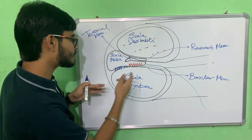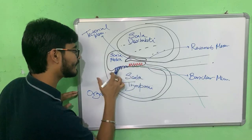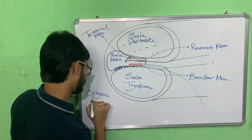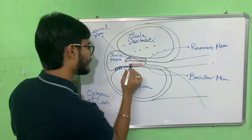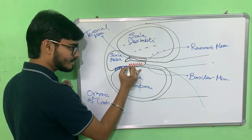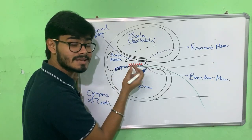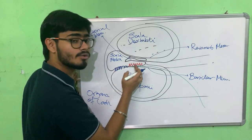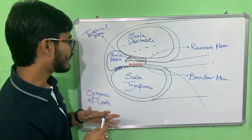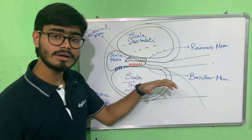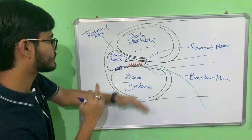On the basilar membrane, we have the organ of Corti. This organ of Corti contains hair cells shown in red color. These hair cells have hair-like structures on them called stereocilia. The tectorial membrane is positioned just above the stereocilia.